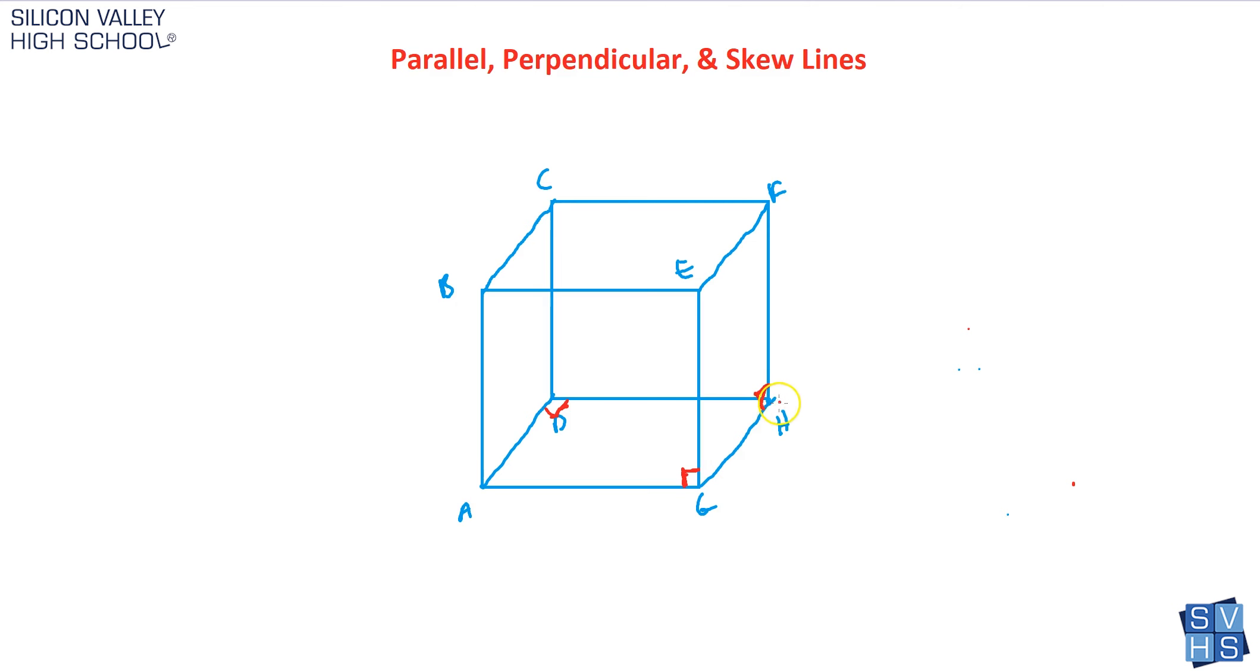I think here's a perfect one. Look at GH. It's definitely on this right face. It's also on the bottom plane. And then what about CD? So GH, which would go on this way forever and this way, and then you have CD, which goes this way and this way, they would never cross. They are skew.